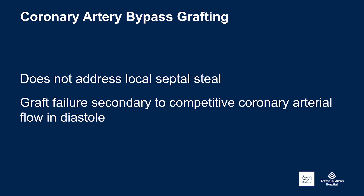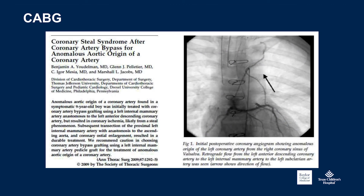Coronary bypass grafting doesn't address the hypothetical concern about local septal steal, and there's always concern about graft failure secondary to competitive coronary arterial flow in diastole. This picture shows a case report of an internal thoracic graft used to treat a patient with anomalous aortic origin of a coronary artery — a very similar phenomenon. The coronary injection shows retrograde flow up the internal thoracic artery. Arteries without fixed stenosis, whether from anomalous origin or myocardial bridge, don't respond well to grafts.